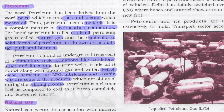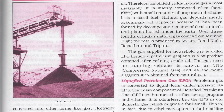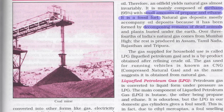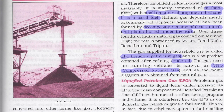Natural gas occurs in association with mineral oil and is composed of about 95 percent methane, with small amounts of propane and ethane. It is a fossil fuel and its deposits mostly accompany oil deposits, being formed by the decomposition of remains of dead animals and plants buried under the earth. The gas supplied for household use is called LPG or Liquefied Petroleum Gas, a byproduct obtained by refining crude oil. The gas used for running vehicles is known as CNG — Compressed Natural Gas — obtained from natural gas.